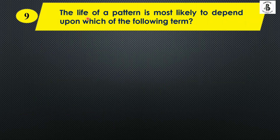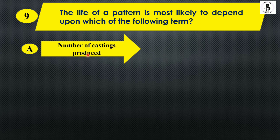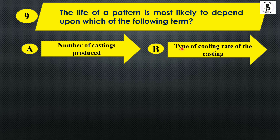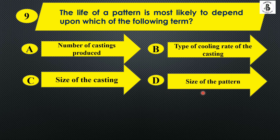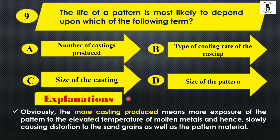The life of a pattern is most likely to depend upon which of the following? Option A: number of castings produced, Option B: type of cooling rate of the casting, Option C: size of the casting, and Option D: size of the pattern. The more castings produced means more exposure of the pattern to the elevated temperature of the molten metal, slowly causing distortions to the sand grains as well as the pattern materials. So the right answer is Option A, number of castings produced.